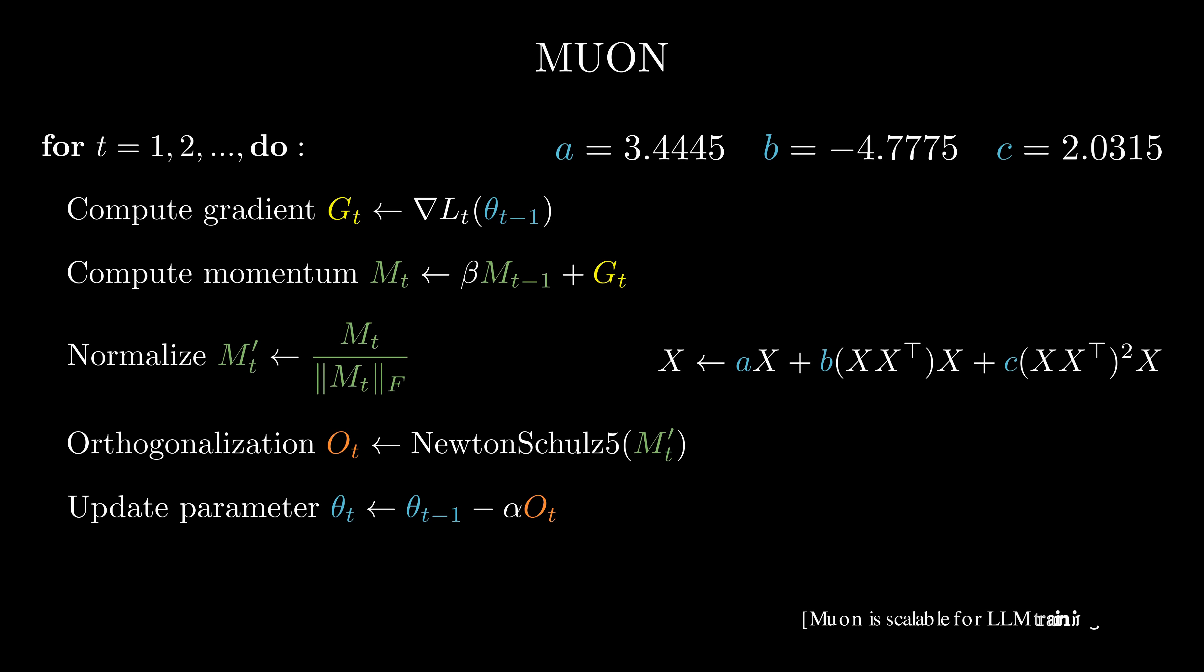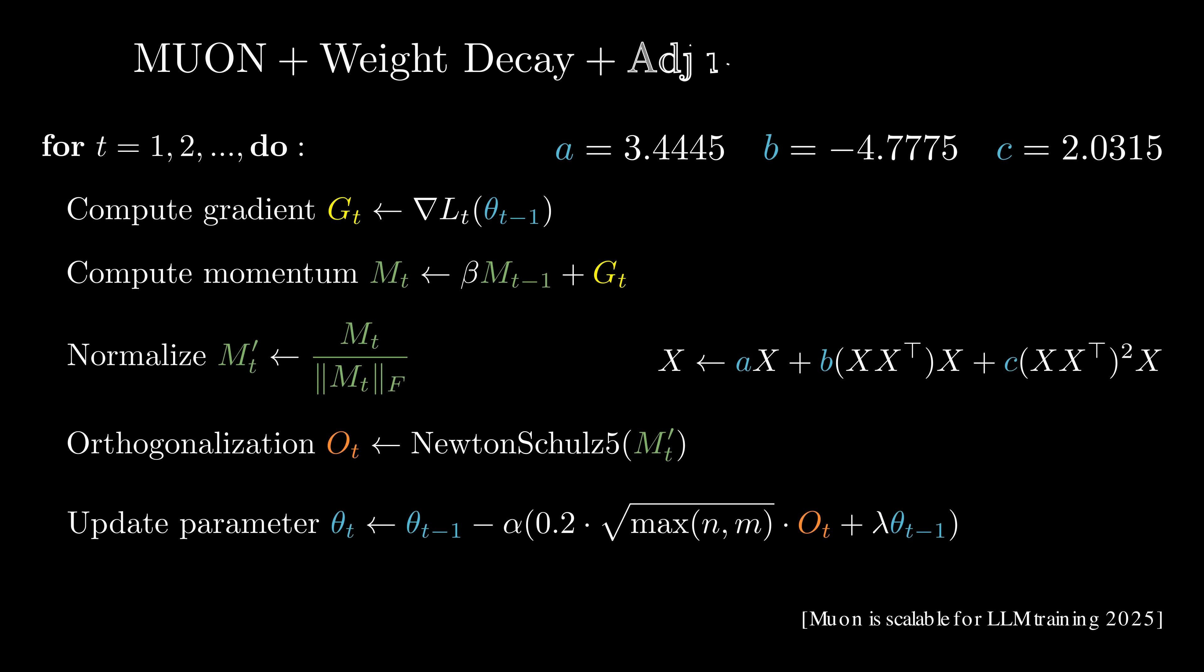But when scaling up to train a larger model, the performance gains over AdamW diminish. To resolve this issue, we add the weight decay mechanism as used in AdamW. In addition, we adjust the learning rate by taking into account the size of the 2D matrix. The two improvements help stabilize the training of large models.